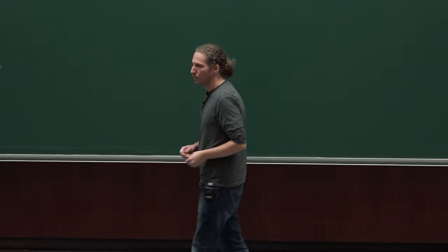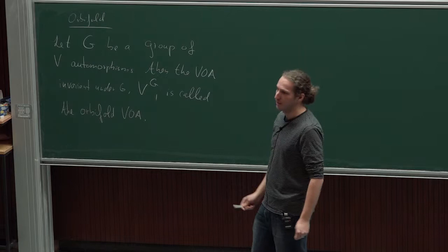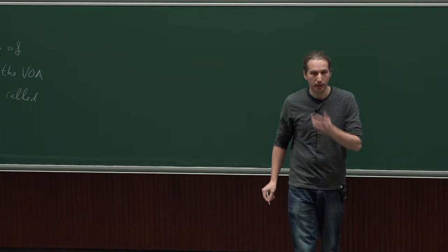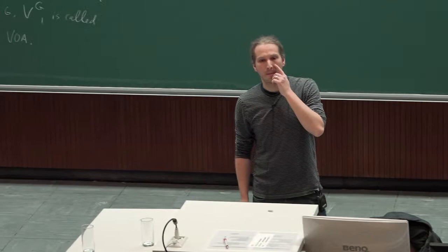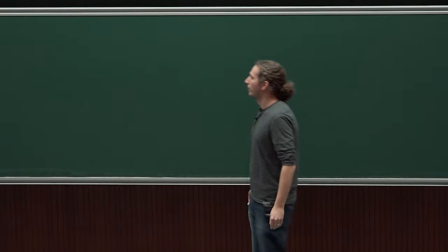One can solve very interesting problems if one better does not assume it, but I will not explain this in these lectures. So for these lectures, we assume it leaves a Virasoro vector invariant. Are we taking the elements which are themselves invariant under G, or is it a subalgebra stable under the action of G? No, it's the ones that are invariant under the action of G.